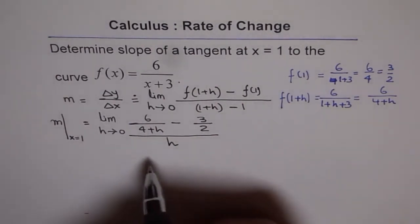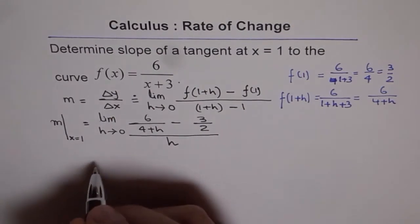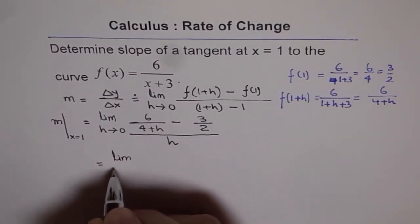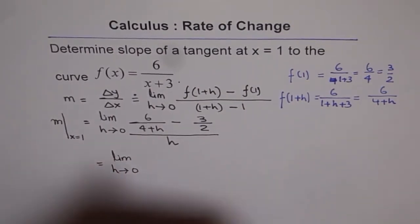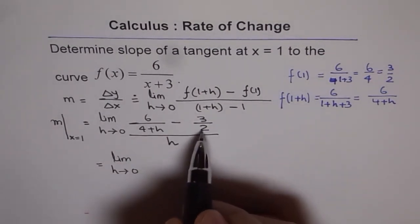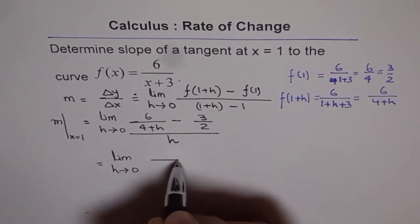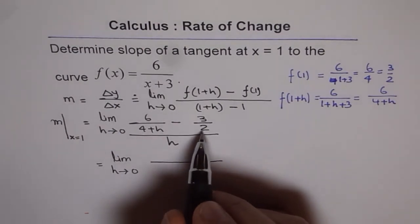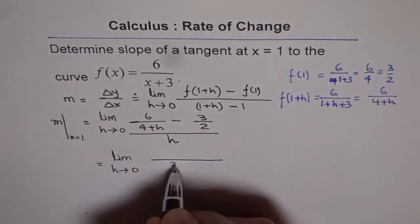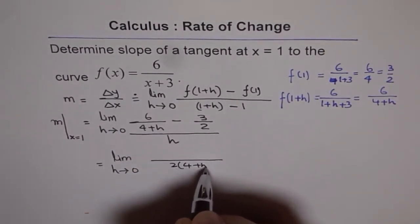Now, to get this answer, we need to simplify it. So, let's do that simplification. So, limit h approaches 0 and we will take a common denominator, correct? So, see here. So, it becomes 2 times (4+h) as a common denominator.